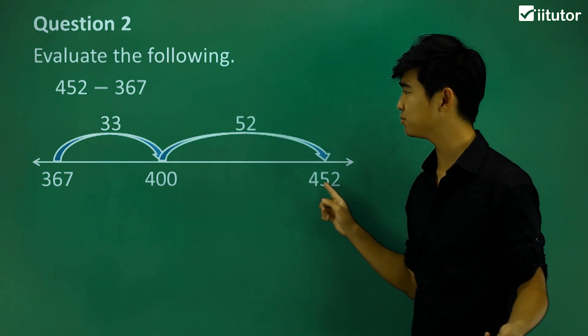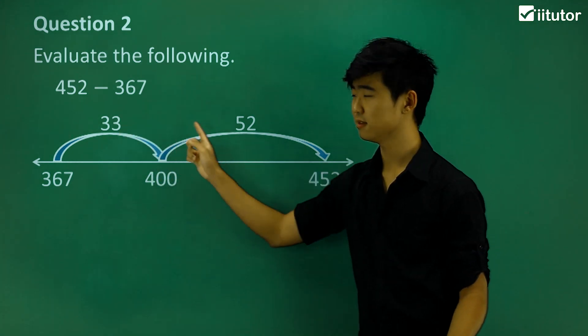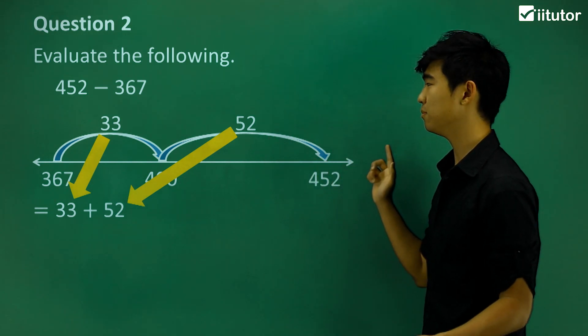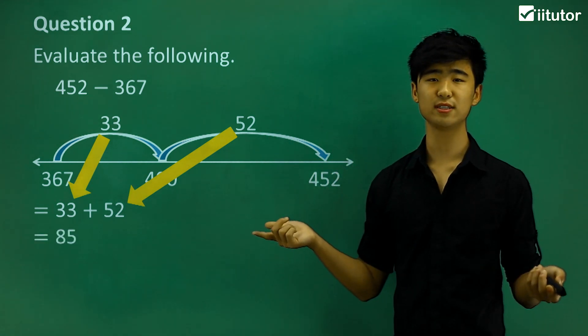So the difference between these two numbers should be these two added together. 33 plus 52 gives us 85.